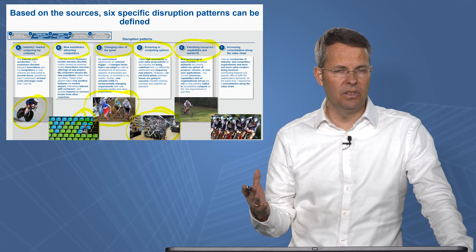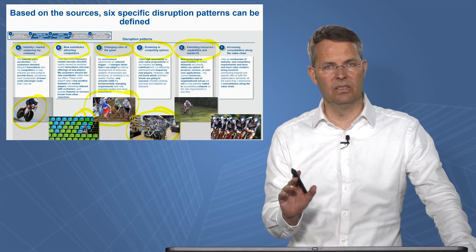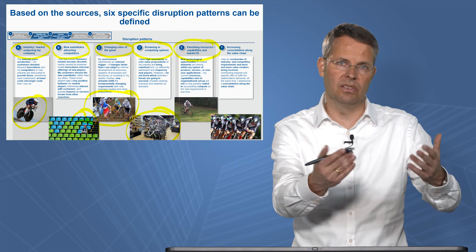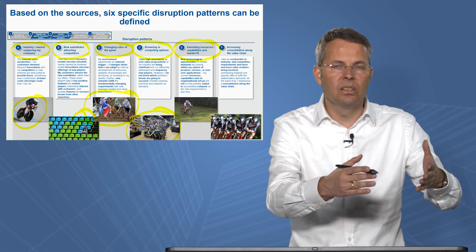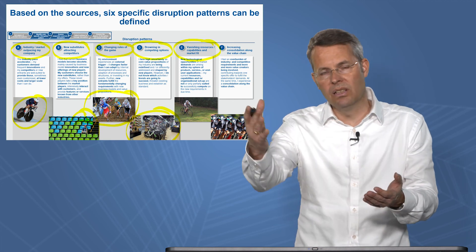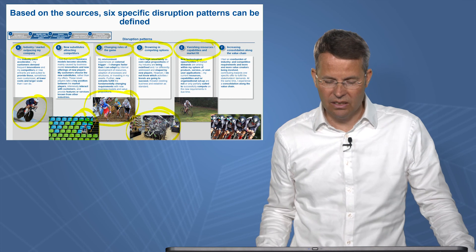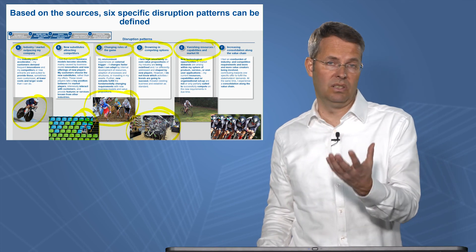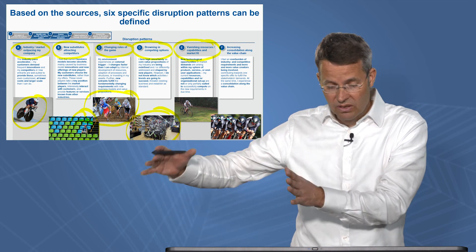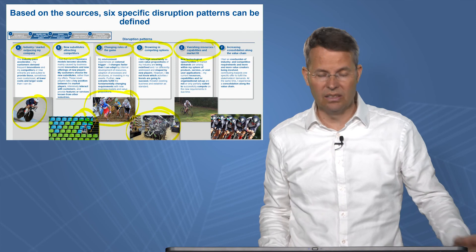The fifth pattern is vanishing resources, capabilities, and market fit. In Germany, for example, we had very successful mail order companies sending catalogs to customers, who would place orders by telephone. Nowadays everything happens on the internet, and what you can do is transition your old catalog business resources and capabilities to fit the new market.